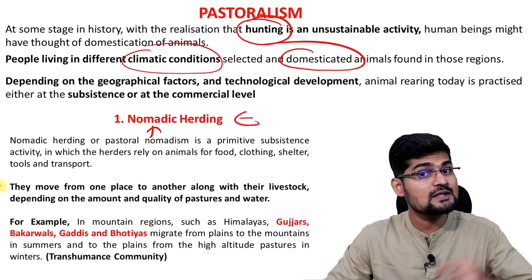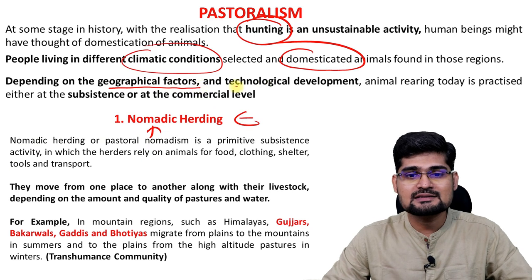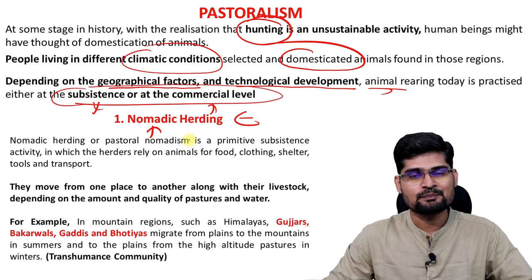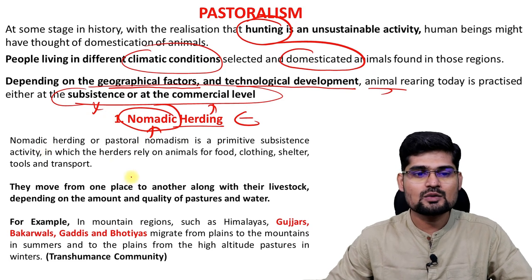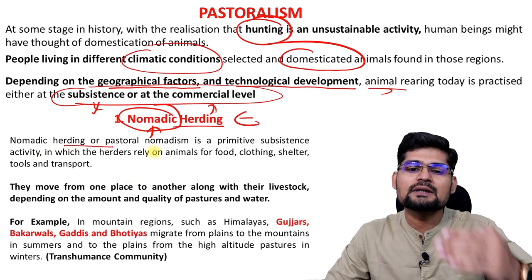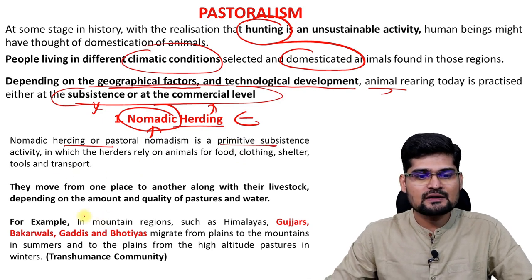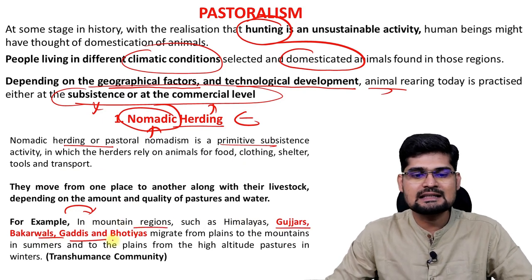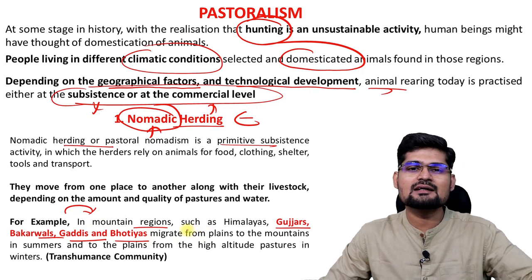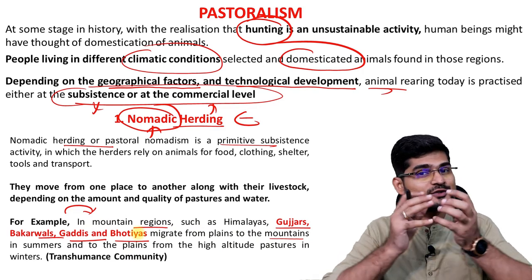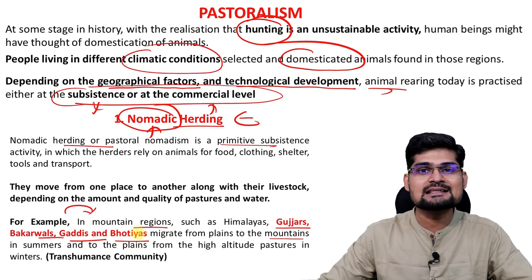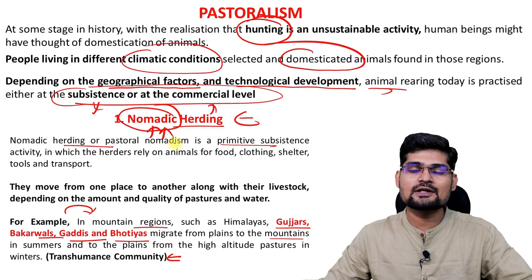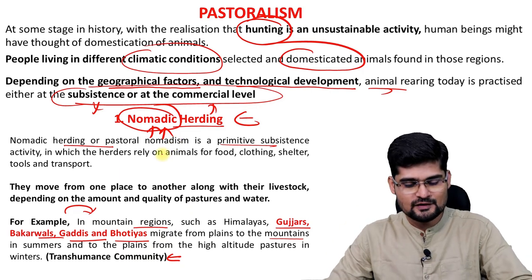One of them is nomadic herding, based on geographical factors, technological development, and animal rearing. Nomadic herders move from place to place — it is one of the primitive types of subsistence. In India, for example, communities living in mountain regions like Gujars, Bakarwals, Gaddis, Bhotiyas migrate from lower foothills and plains to the mountains in summer when snow melts, going to those valleys with their herds. This is also called a transhumance community — they are not settlers at one location but keep moving with the seasons.